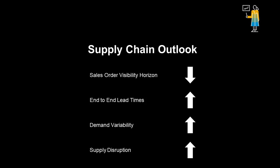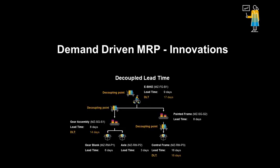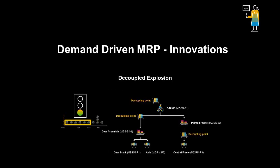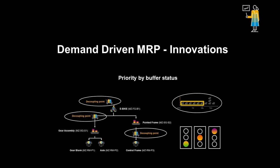DDMRP emphasizes visibility and variability reduction in the supply chain. Besides using concepts from lean, theory of constraints and six-sigma, it also comes with a set of innovations: decoupled lead time through the usage of decoupling points, also known as buffer positioning, which allow planning and execution to be compressed with decoupled lead times to provide more realistic timing indications for the protection of stock availability; net flow equation, applied daily using three elements — what is available, what is on the way, what is truly required; decoupled explosion, the ability to restart an explosion at a decoupling point using the net flow equation; and planning emphasis on buffer status to focus limited time and resources to maintain the integrity of the decoupling points.